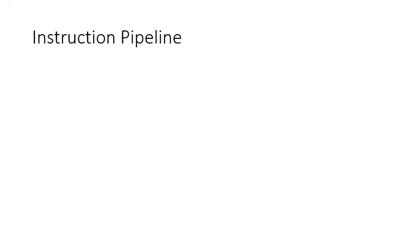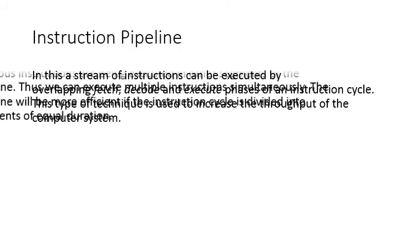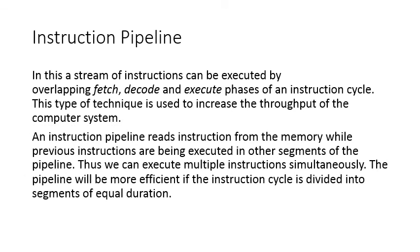The instruction pipeline. In this, a stream of instructions can be executed by overlapping fetch, decode, and execute phases of an instruction cycle. This type of technique is used to increase the throughput of the computer system. This sounds good, but obviously there are some side effects of the instruction pipeline. An instruction pipeline reads instructions from memory while previous instructions are being executed in other segments of the pipeline. Thus, we can execute multiple instructions simultaneously. The pipeline will be more efficient if the instruction cycle is divided into segments of equal duration, which means you'll get information evenly distributed at the same time.